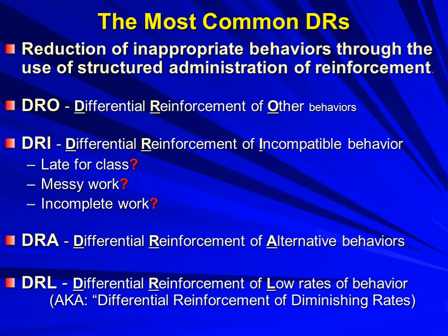In DRI, the individual is systematically reinforced for a behavior that's in opposition to or incompatible with the behavior that concerns us. We reinforce and strengthen actions that get in the way of showing the behaviors we dislike. For example, we could reinforce following directions because doing so can't happen at the same time as non-compliance. We positively recognize being on task because it prevents being off-task. Being on time eliminates tardiness. Reinforcing neat work motivates the youngster to display neatness, ridding their repertoire of sloppy work. The same goes for complete work — reinforcing that nixes incomplete assignments.